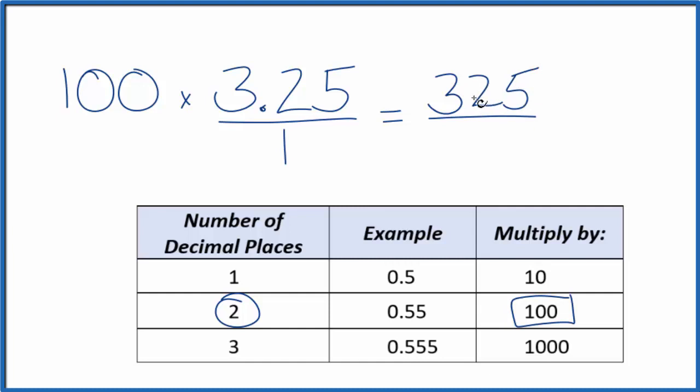But 325 doesn't equal 3.25. We need to multiply the bottom by 100 as well. So now we have 100 over 100. 100 divided by 100, that's just 1. We're not changing the value here. 100 times 1, that gives us 100. And now we have a fraction.